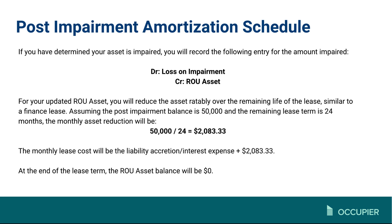At the end of the day, the right-of-use asset balance will still go down to zero — it will just be going down a little bit differently.